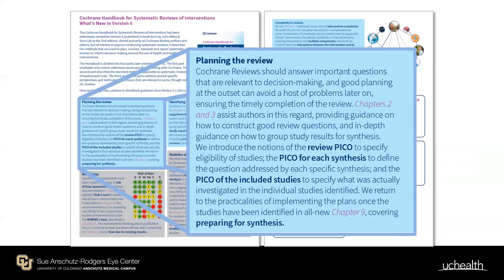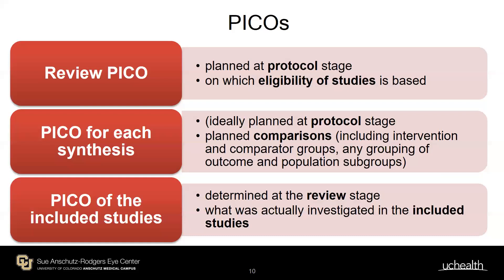The new chapter distinguishes three PICO levels. First, the review PICO — the PICO you planned at the protocol stage, on which study eligibility is based. Second, the PICO for synthesis — the planned comparisons including intervention and comparator groups, grouping of outcomes, and population subgroups. Third, the PICO for included studies — what was actually investigated in those studies, which may differ from your original question.